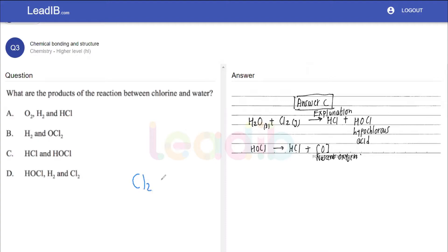Chlorine and water will react to form HCl, but more interestingly HOCl, which we call hypochlorous acid.